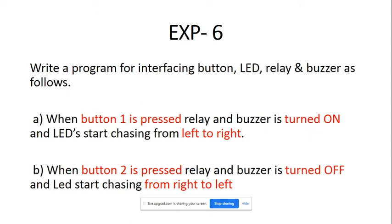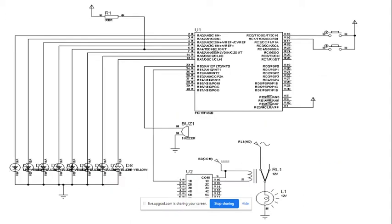When button one is pressed, one action occurs; when button two is pressed, the second action occurs. To achieve this, we will first construct the interfacing diagram. In the PIC microcontroller there are five ports: port A, port B, port C, port D, and port E. You can use any port as per your choice. Here we are interfacing two switches (switch one and switch two) and four or eight LEDs as per your choice, along with a relay with a driver IC.